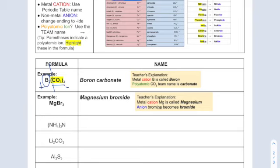The second part, the CO3, has a team name from the ion chart. So you see it here, carbonate. So boron carbonate is the name.